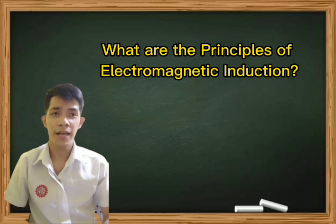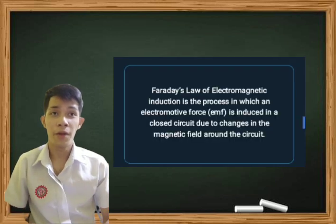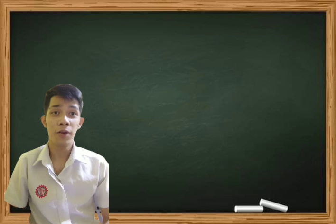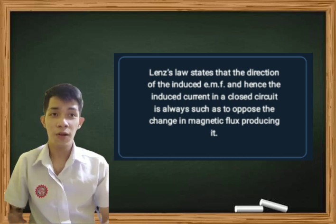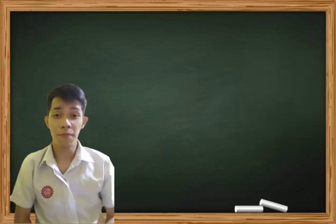What are the principles of electromagnetic induction? We have two principles. The first one is Faraday's Law of electromagnetic induction: the process in which an electromotive force is induced in a closed circuit due to changes in the magnetic field around the circuit. The second one is Lenz's Law, which states that the direction of the induced electromotive force and hence the induced current in a closed circuit is always such as to oppose the changes in magnetic flux producing it.